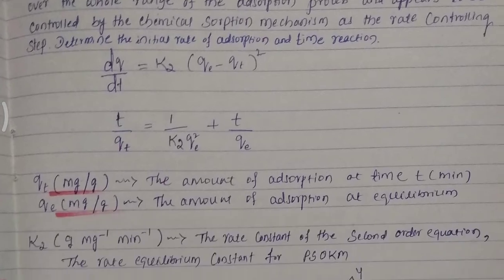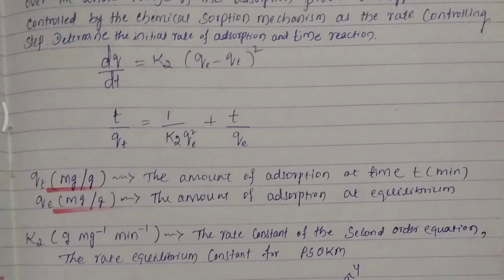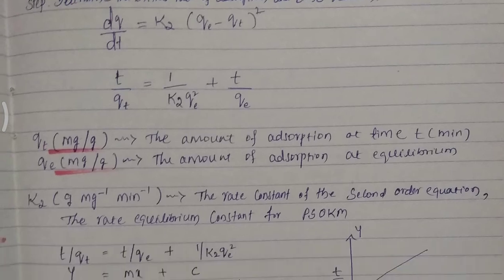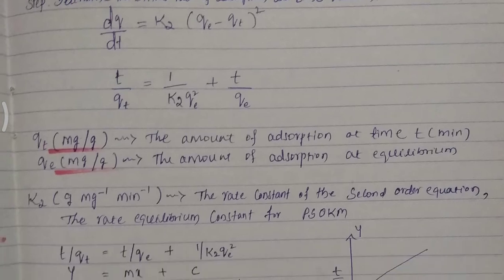Here, qt is in units of milligrams per gram, representing the amount of adsorption at time t in minutes. qe is in units of milligrams per gram, the amount of adsorption at equilibrium. k2 has units of grams per milligram per minute. k2 is the rate constant of the second order equation, the rate equilibrium constant for the pseudo second order model.